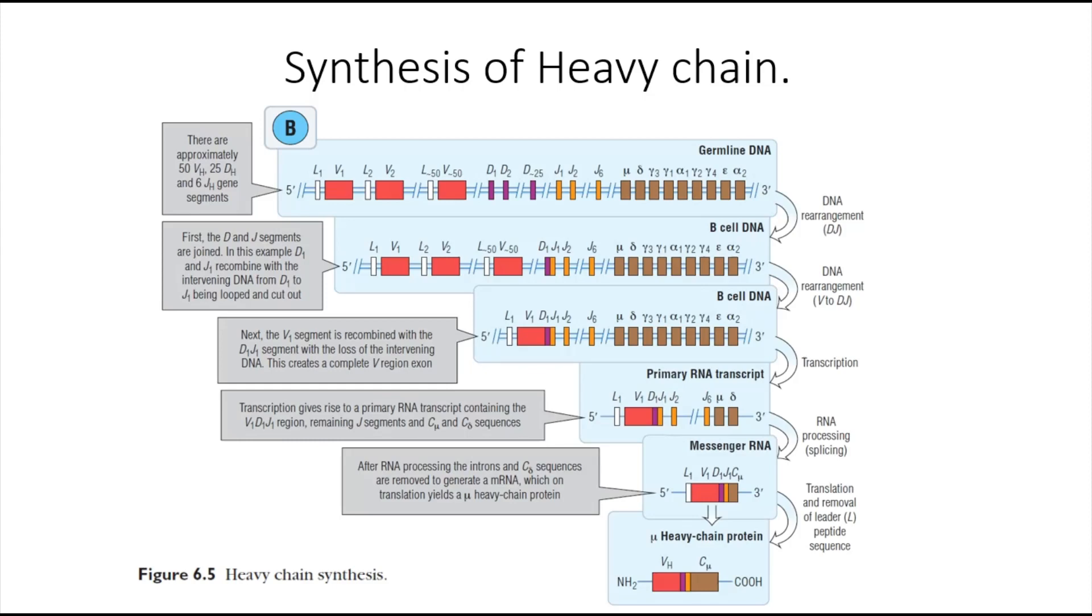For example, we have both the mu and delta constant regions, so we choose one to keep and cut the other. These constant regions are very important in determining the type of immunoglobulin produced. After that, translation and removal of the leader peptide occur.